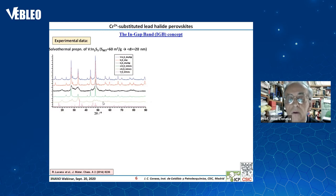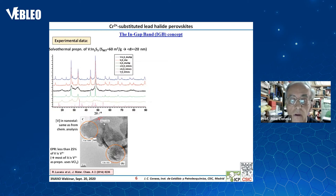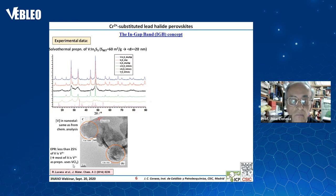We have been able to further characterize this material. With high-resolution TEM it was possible to verify that even in a single nanocrystal, the vanadium content is the same as in the chemical analysis. Also, with EPR we have been able to verify that less than 25% of vanadium is in the vanadium 4+ state, and most of it must be in the vanadium 3+ state, which is consistent with our use of vanadium trichloride for the preparation.